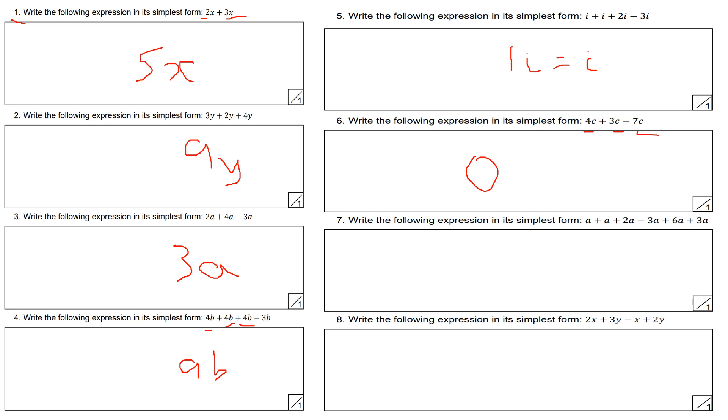Question number 7, simplify by collecting like terms. a plus a is 2a, plus 2a gives 4a, minus 3a gives 1a, and plus 9a gives 10a.